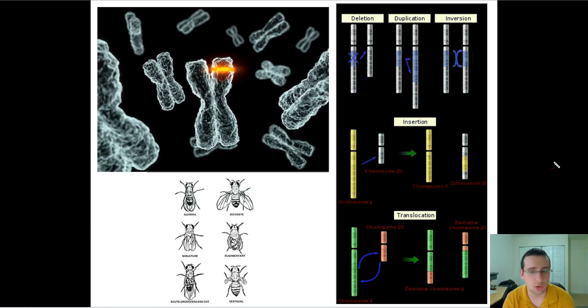And there can be either chromosome mutations or gene mutations. Here you see some examples of chromosome mutations, which involve the deletion or duplication or inversion of pieces in the chromosome,